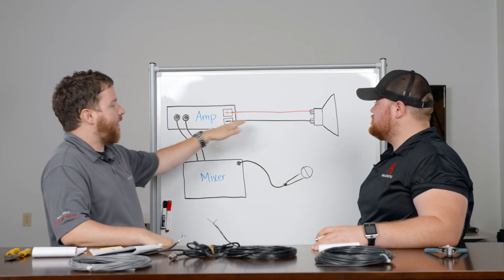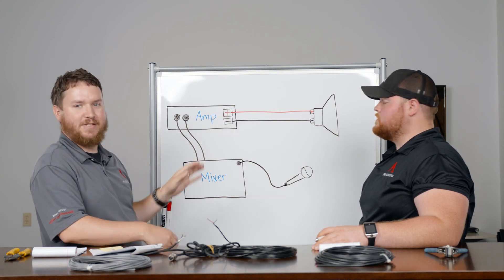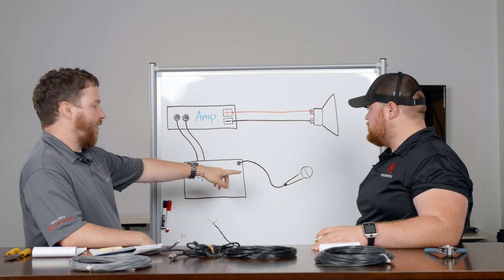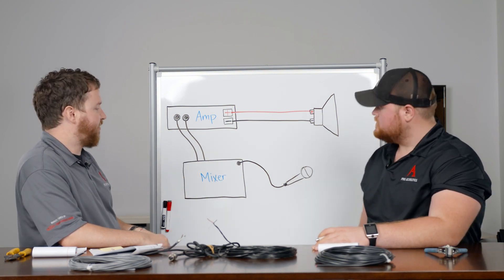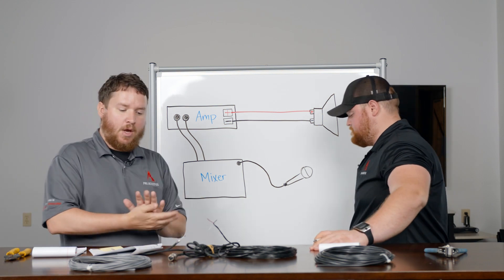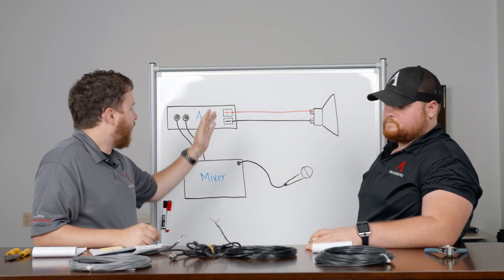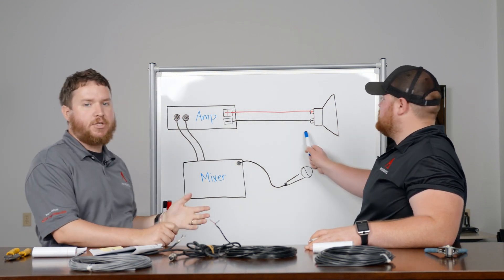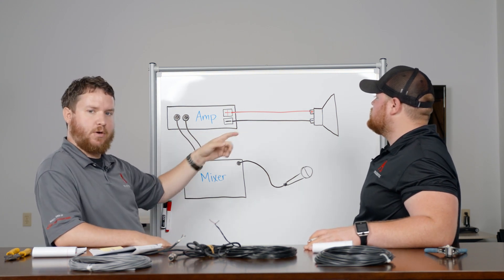But that's not the only place where cabling or wiring is involved in a system package. You also see we've got a microphone, a mixer, and an amplifier that one of our wonderful web team drew up for us.